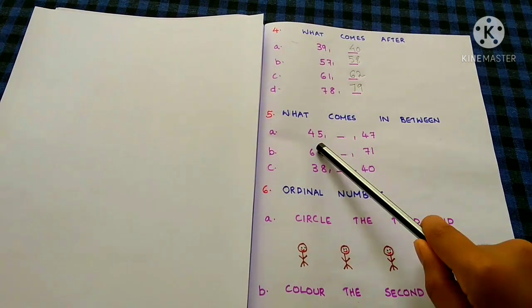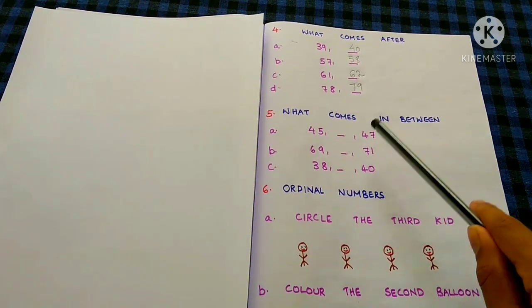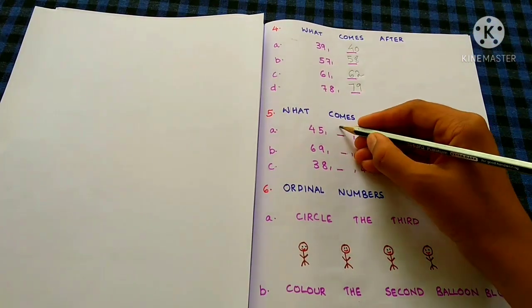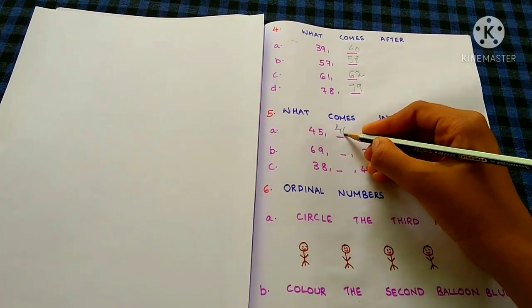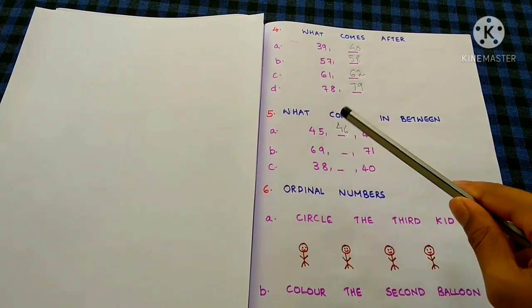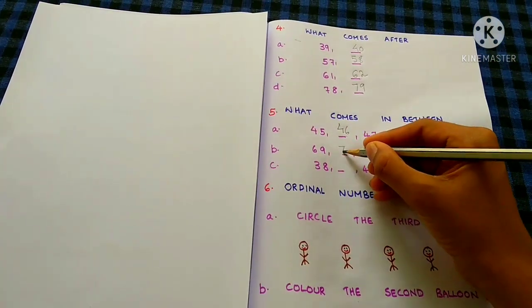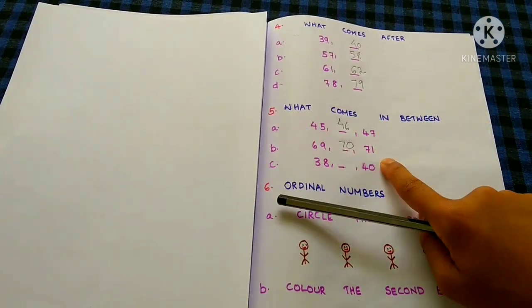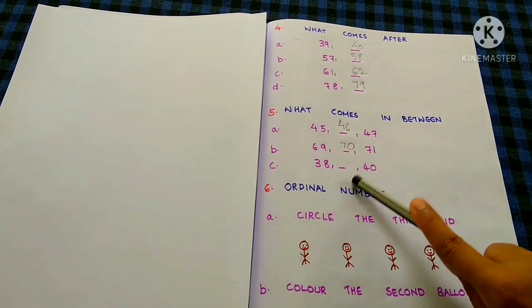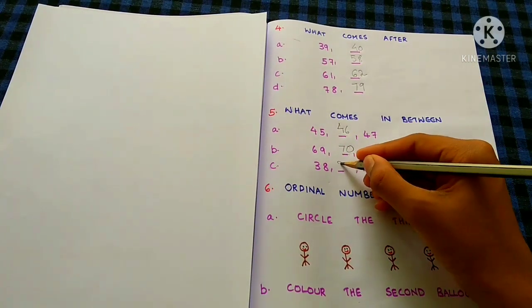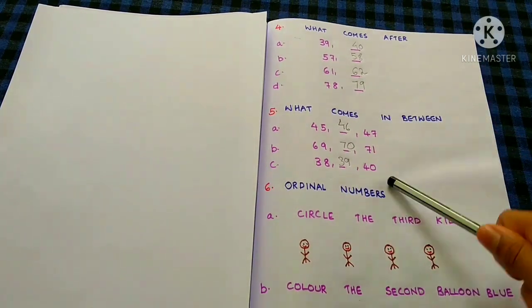What comes in between? 69, 45 and 47 is 46. 69 and 71 is 70. 38, 39, 40.